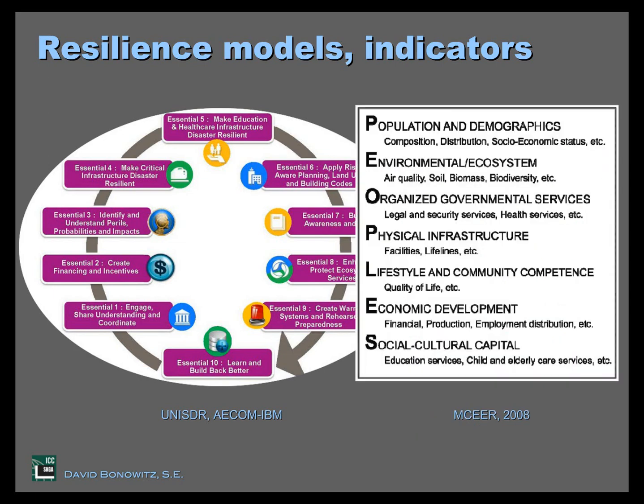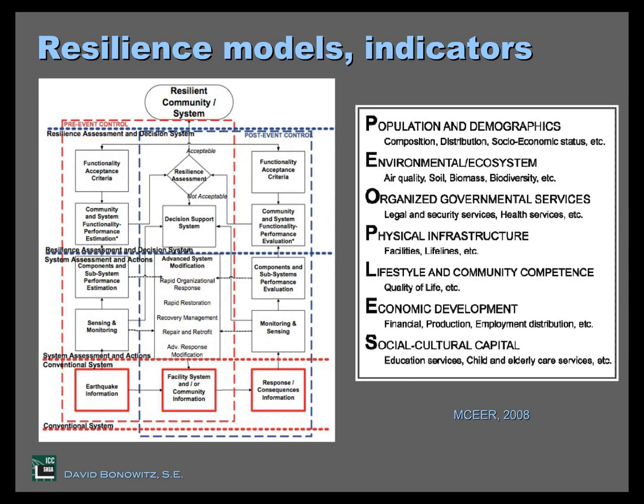Everybody's got a diagram or a flow chart — they're not all circles. Here's one from our colleagues at MCER, an earthquake engineering research organization. Very academic. It has a nice acronym that spells out 'PEOPLES.' In their model, they've got a very detailed academic framework with triple integrals and blanks you fill in with data, and at the end out pops the resilient community or resilient system. The problem, of course, is we have none of the data to fill into those blanks, so a very complicated model like this isn't immediately helpful.